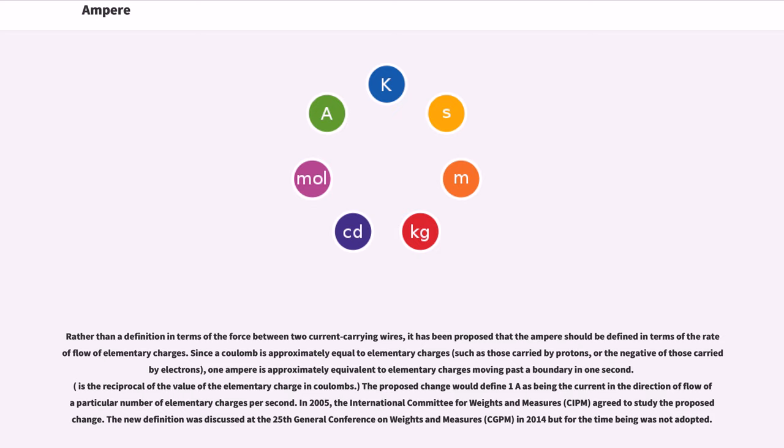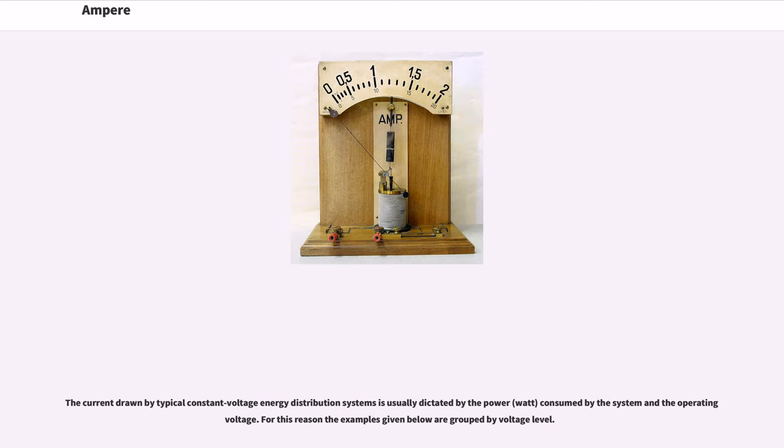The new definition was discussed at the 25th General Conference on Weights and Measures (CGPM) in 2014 but for the time being was not adopted. The current drawn by typical constant voltage energy distribution systems is usually dictated by the power (watt) consumed by the system and the operating voltage.